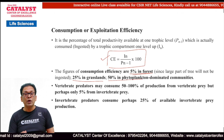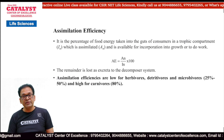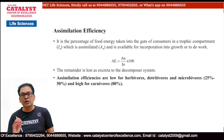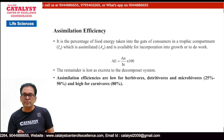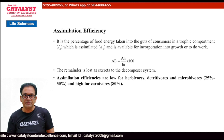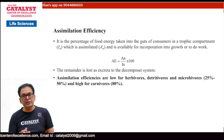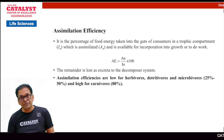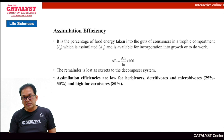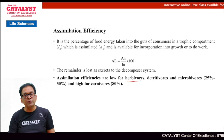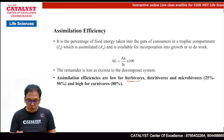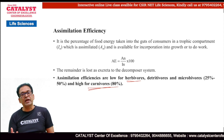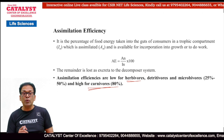If we talk about assimilation efficiency, it will depend upon what the herbivore is feeding on. They are feeding on green plants which contain many things like cellulose and lignin that are not easily digestible. So assimilation efficiency will depend upon what kind of food is being consumed. It is going to be less for herbivores because they are feeding on such food material that is not easily digestible, but assimilation efficiency tends to be higher for carnivores because they are feeding on other organisms made up of things which can be easily digested.